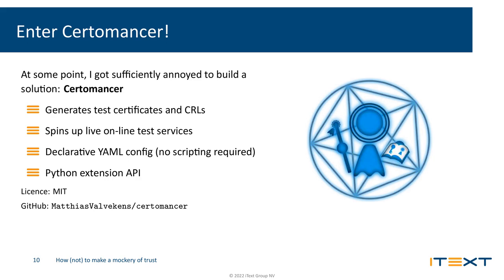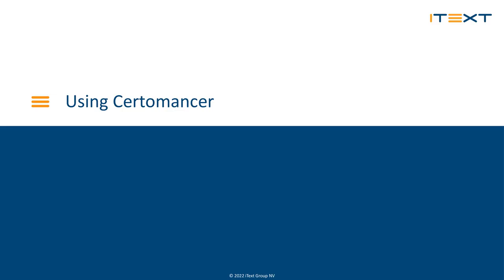At some point my frustration with this process reached critical mass, and I sat down for a weekend to put together an actual solution. That's what became Certimanager. Certimanager not only generates test certificates and CRLs for you, but it also handles the provisioning of these trust services. One of its biggest advantages is that it doesn't require any scripting — in the vast majority of use cases, you can simply configure it declaratively. If your use case is more complicated, you can always use the Python API to extend its functionality. The code is hosted on GitHub.